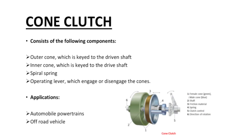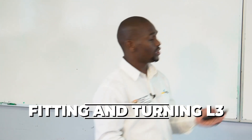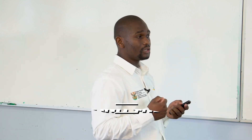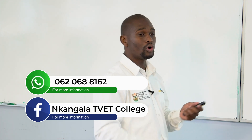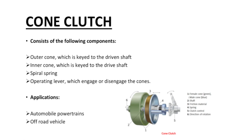Cone clutch components: an outer cone, which is keyed to the driven shaft — sometimes called a female cone; an inner cone, which is keyed to the driving shaft — sometimes called a male cone, spigot, or recess cone; a spiral spring; and an operating lever, which engages the cone. Applications: found on automobiles, powertrains, and off-road vehicles.